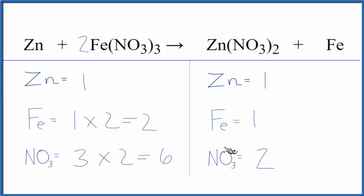But that's okay. If I put a three in front of the zinc nitrate, I have the two nitrates here times three. That'll give me six nitrates. Those are balanced.